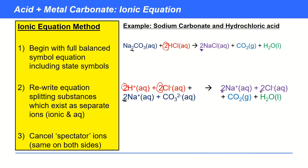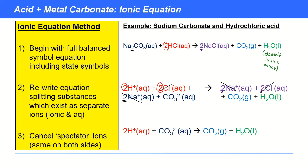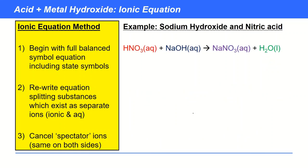CO₂ gas stays as CO₂ gas because there are no ions. H₂O, although it can form ions, doesn't ionize significantly here — it's mostly a covalently bonded molecule, so we leave it as H₂O. Finding the spectator ions: Cl⁻ is the same on both sides, and 2 Na⁺ appear identically on both sides, so both are cancelled. The final ionic equation is: 2H⁺ + CO₃²⁻ → CO₂ + H₂O.